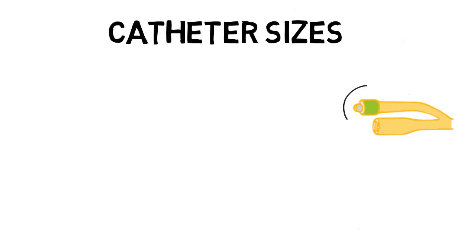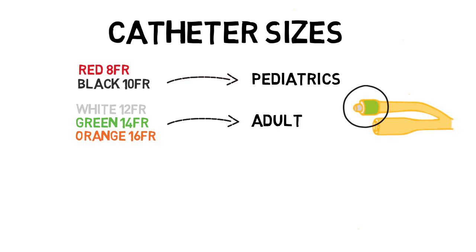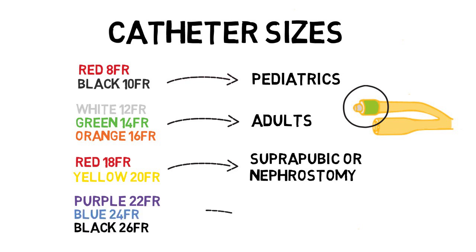Sizes of urinary catheters. Catheters come in a variety of sizes, and the diameter is referred to as French. 12, 14, and 16 French are the common sizes for adult indwelling urethral catheters. 18 and 20 French can be used for suprapubic or nephrostomy tubes. Towards the larger end of the spectrum, 22, 24, and 26 French are used for the evacuation of debris and/or irrigation.